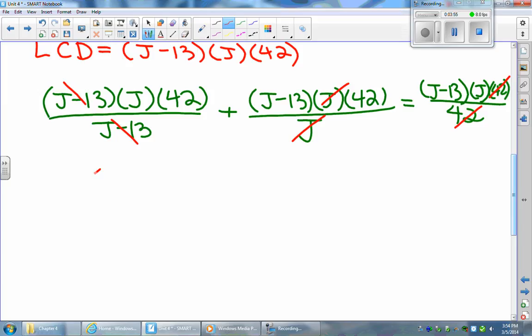So I'm going to just write 42 times j. I'm going to put 42 in the front because I like when my coefficients go in the front. We have 42 times j minus 13, so we're going to use the distributive property and write this as 42j minus 546.